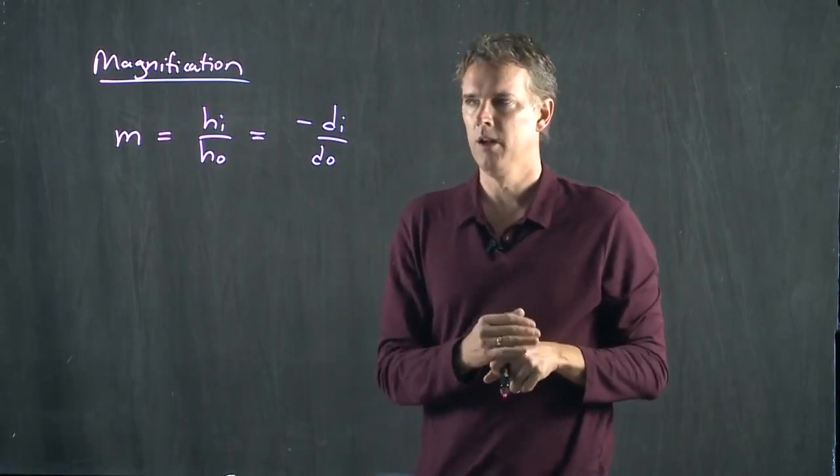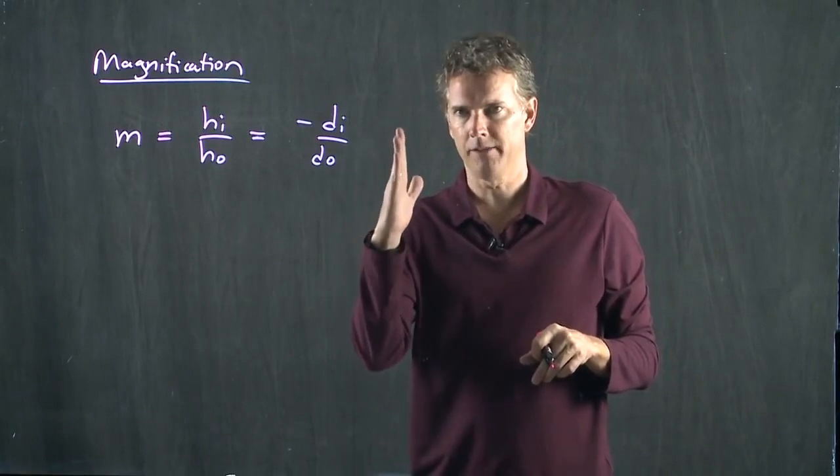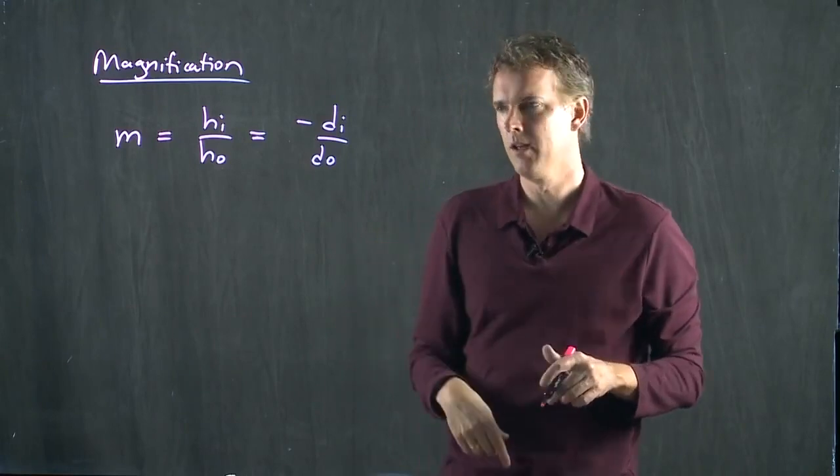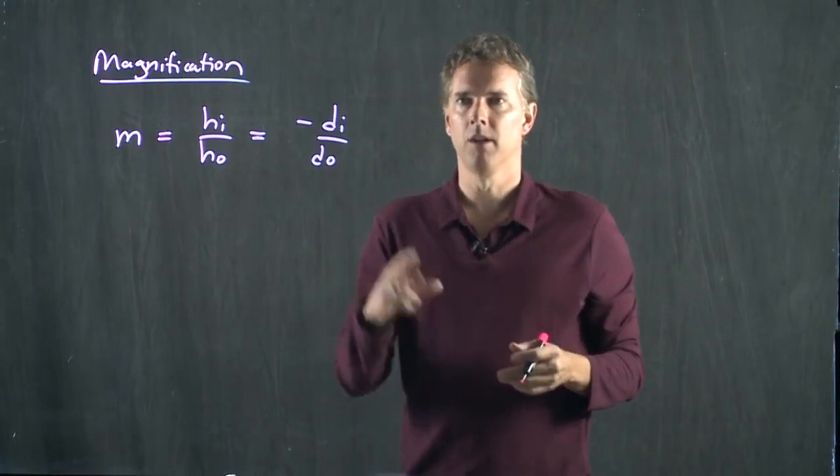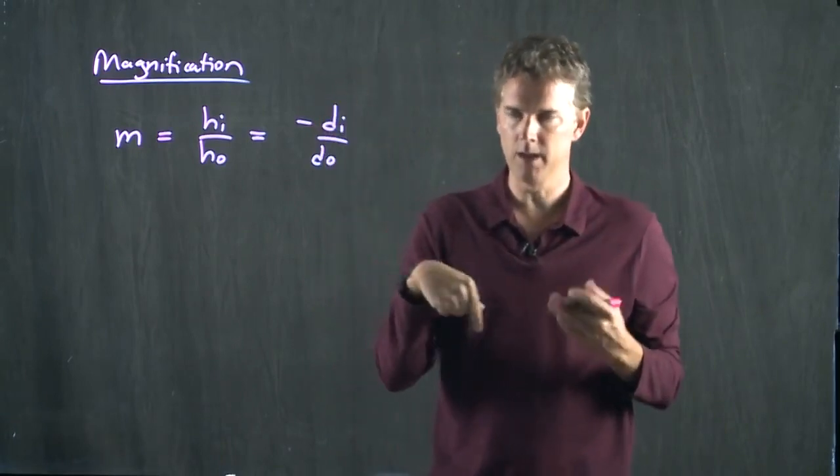In the last example, when we had the object placed right at C, the image was also at C but it was inverted. Negative 2 over 2 just means magnification of 1 but an inverted image.